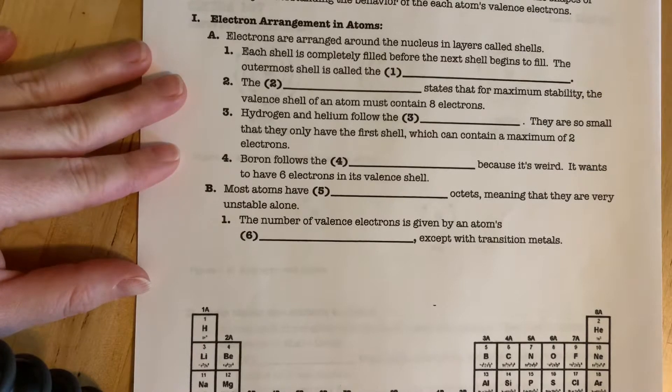Last time we talked about electrons arranging themselves in layers around the nucleus of an atom, but we didn't go into much more detail than that. Today we'll be talking about how the arrangement of electrons determines how and why bonding occurs.